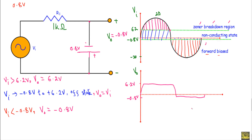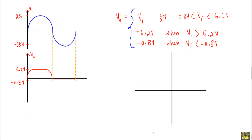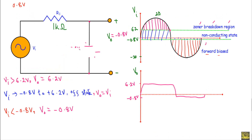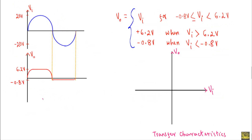So the complete output waveform is: output follows input voltage in the linear region, then is fixed at 6.2 volt, then follows input again, then is fixed at minus 0.8 volt, and then follows input again. Now I will show you how to draw the transfer characteristics of the given clipper circuit. The transfer characteristics show the relation between output and input. We take input on the x-axis and output on the y-axis. When Vi is greater than 6.2 volt, Vo is equal to 6.2 volt.